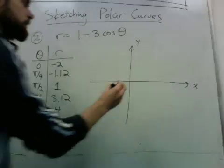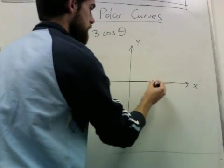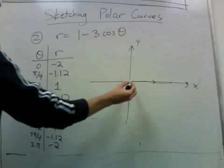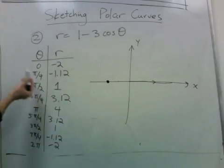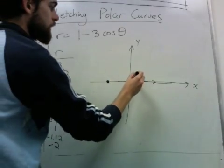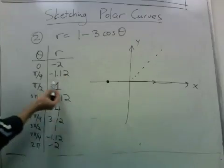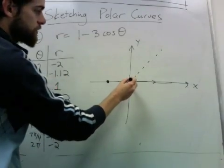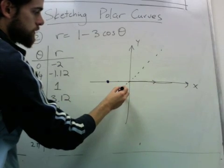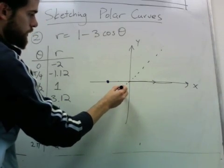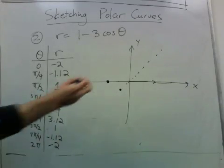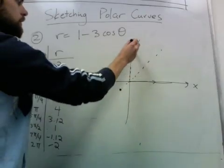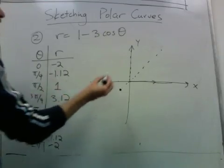When the angle is 0, so I'm here, I have r is minus 2. So that means I go backwards by 2 to get this point. When we have pi over 4, we're here, and we have negative 1.12, so we go backwards by 1.12, we're there. When we're at pi over 2, the r value equals 1.